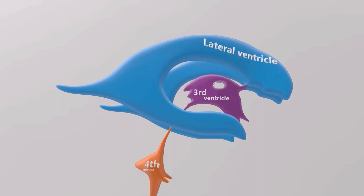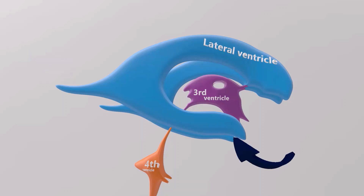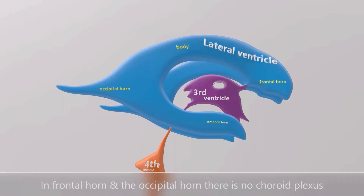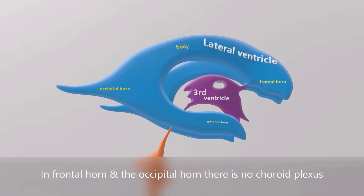We should be aware of the horns of the lateral ventricle: the frontal horn in the front, the occipital horn which goes into the occipital lobe, and the temporal horn which houses the hippocampus. On top we see the body of the lateral ventricle. It's important to note that in the frontal horn and in the occipital horn there is no choroid plexus.